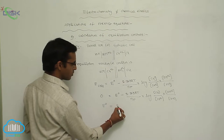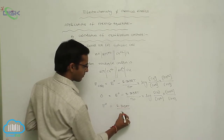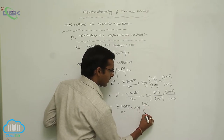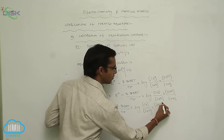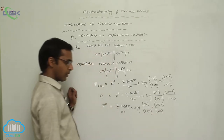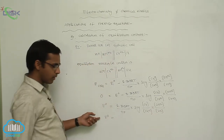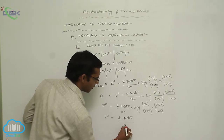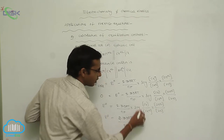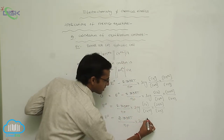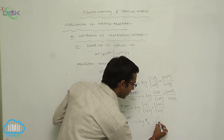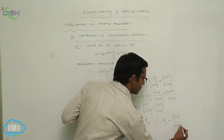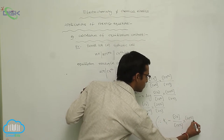Therefore E° = (2.303RT/Nf) · log([Cu²⁺]/[Zn²⁺]). The standard EMF or standard cell potential equals (2.303RT/Nf) · log(K). This entire ratio of concentrations is considered a constant value — the equilibrium constant Kc. That is, Kc = [Cu²⁺]/[Zn²⁺].